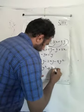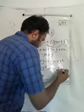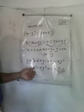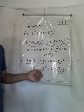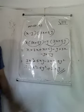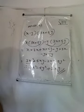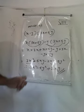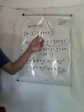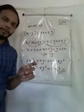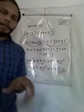So the final answer is 3x squared minus 5y squared plus 2xy. This is the multiplication of a binomial by a binomial — one binomial multiplied by another binomial.